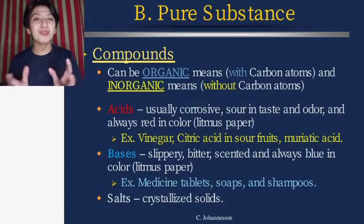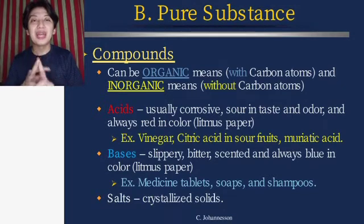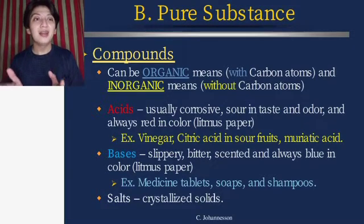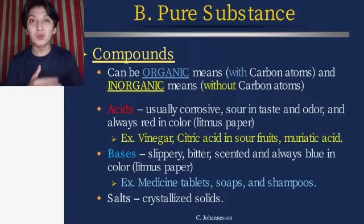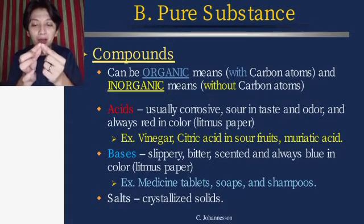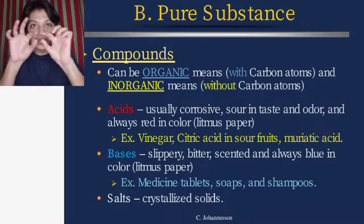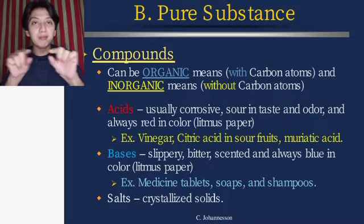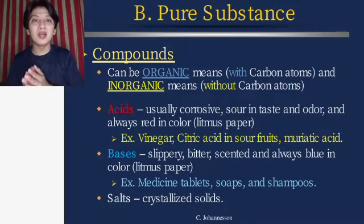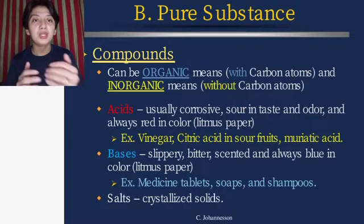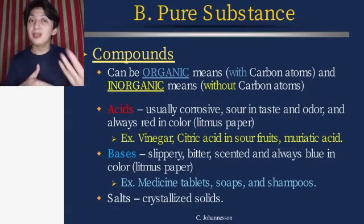Acids are usually corrosive, sour in taste and odor, and always turn litmus paper red. Bases are slippery, bitter-scented, and always turn litmus paper blue. Litmus papers are indicators — they are like very thin red or blue paper used to test substances.